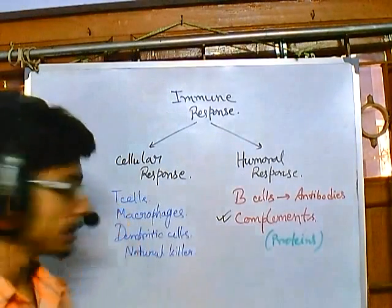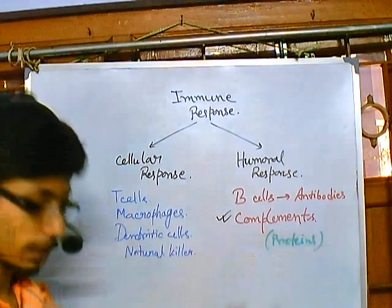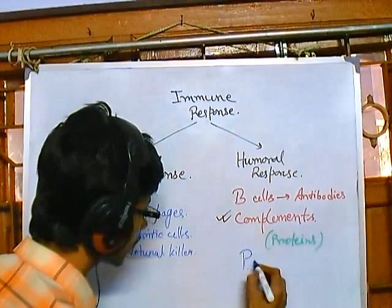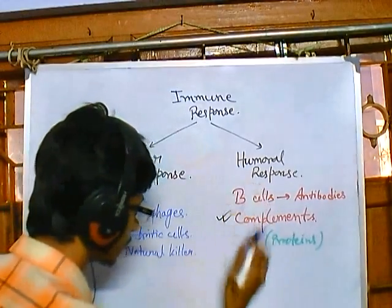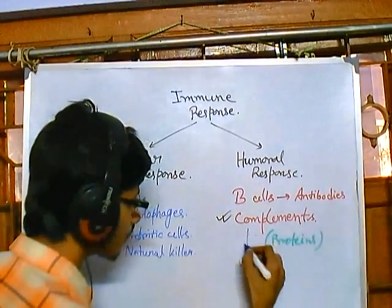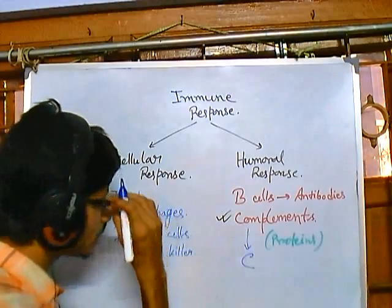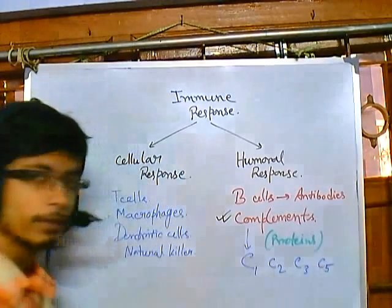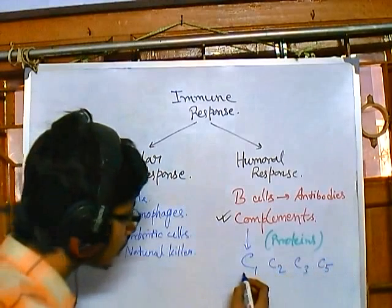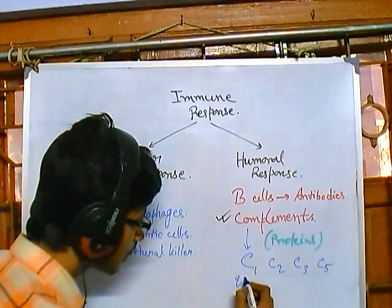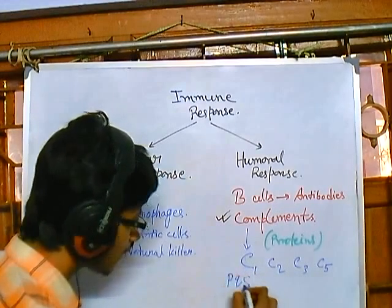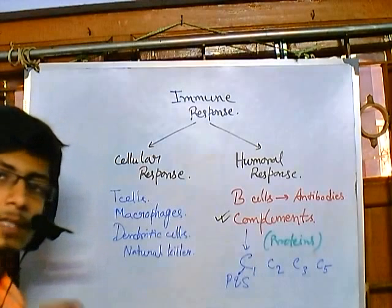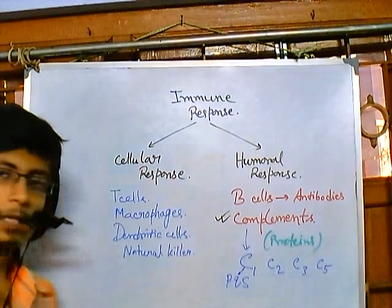In the complement system, they are made up with proteins. 'C' stands for complement. There are different types of C molecules: C1, C2, C3, C5, and so on. C1 is further divided into sub-parts Q and S. These are the major complements we can find, and each of these complement molecules are proteins.